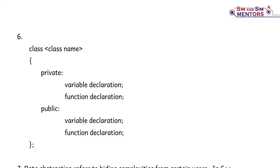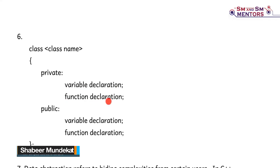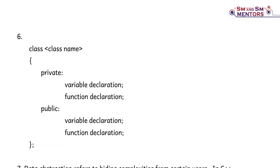A class is a blueprint or definition of an object. There are two class members: data members, which include variables and functions. Class members are private and public — normally variables are private and functions are public.